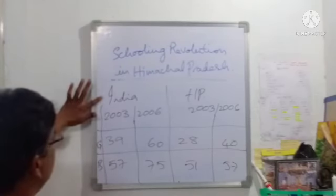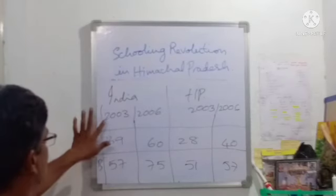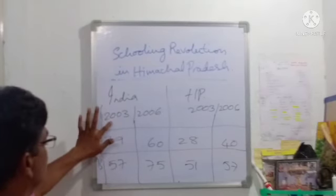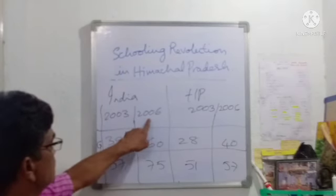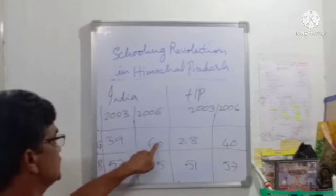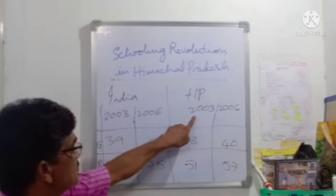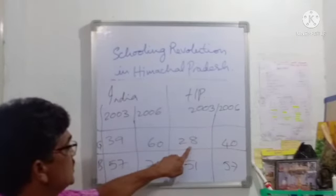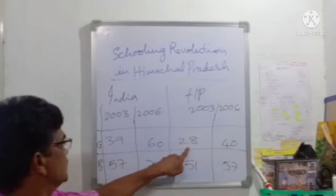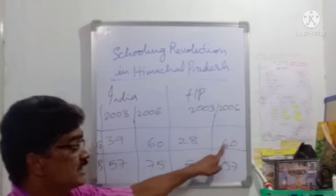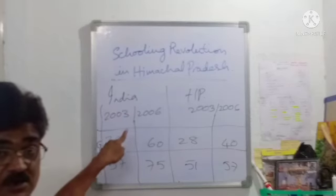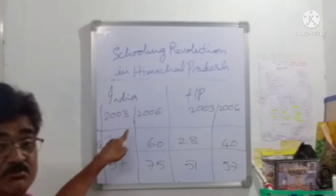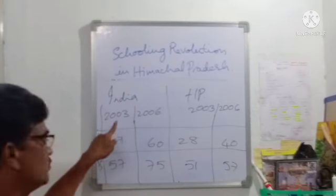Looking at the data: in India overall, in 2003, 39 girls were educated; in 2006, 40 girls were educated. In Himachal Pradesh specifically, in 2003, only 28 girls were educated; but by 2006, this rose to 40 girls educated. This comparison shows the national figure versus the state figure across India's 24 states.